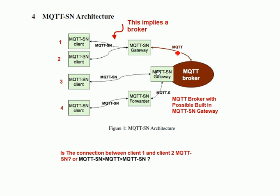You initiate a connection here and that connection goes through the gateway and connects to the broker. So on the broker you'll see this client connected. This is a standalone gateway with a broker over here.